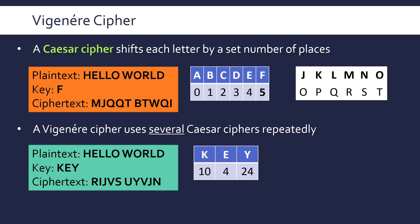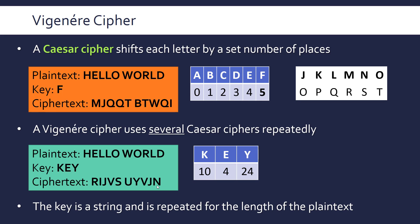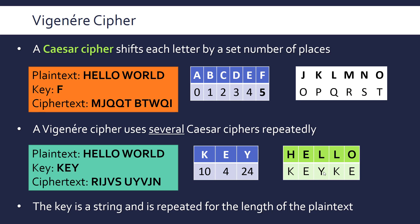We have the same plain text but a different cipher text because the process is a little different. We're using a string as our key — that's the first notable difference. We now repeat this key along the length of the plain text. In the Caesar cipher, the same shift is applied to every letter. Here, we lay out the key and it repeats. So the first character uses the shift of the first key character, then the second and third, and then because the key is only three letters long, it repeats itself.